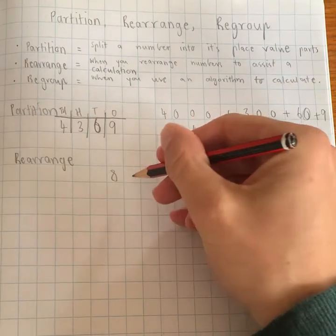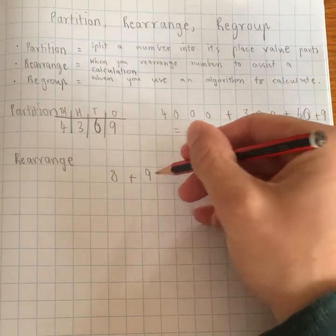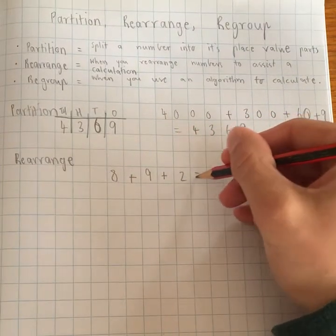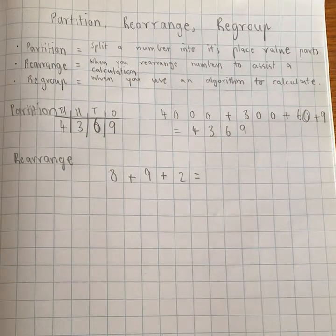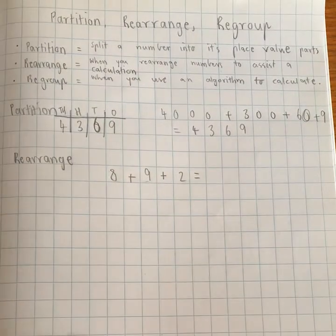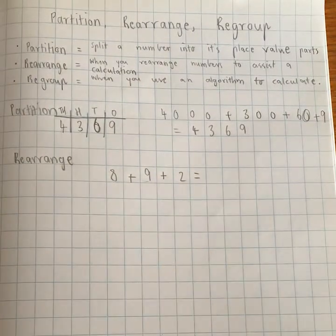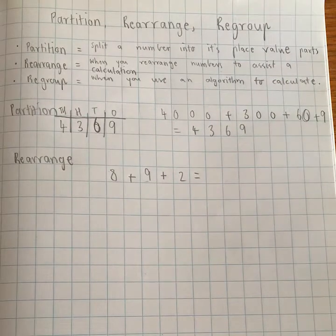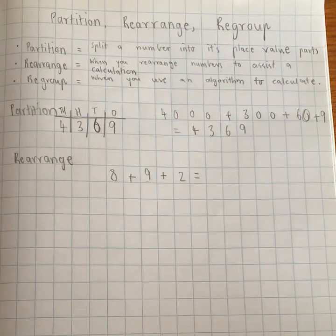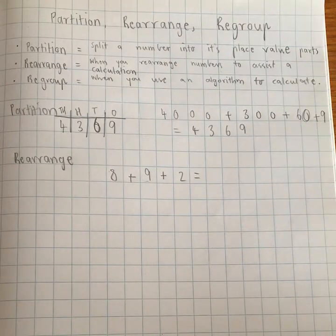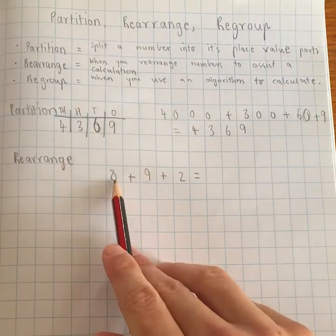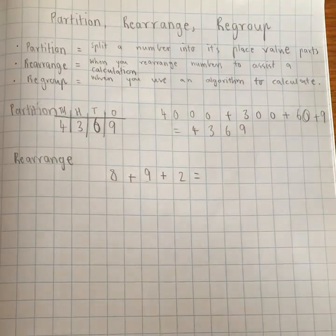Let's say I had 8 plus 9 plus 2. So I could attempt to add 8 and 9, we always work from left to right, but what I could do to make things a little bit easier for myself, I can rearrange the numbers in a way so that the calculation becomes easier. So for example, 8 and 2, I know that those two numbers are 10's friends.